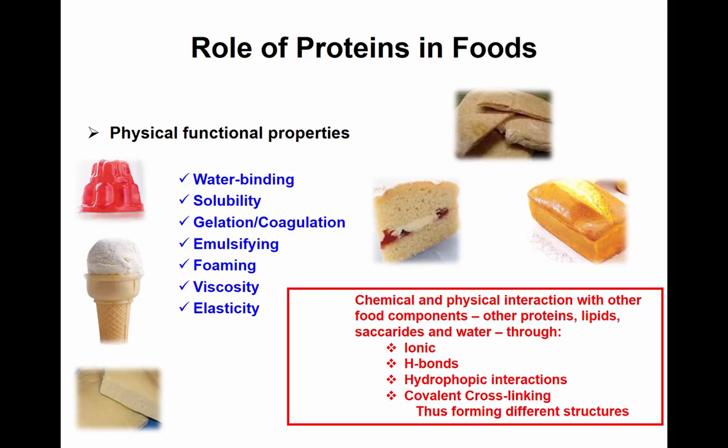What causes these different functionalities is basically chemical interactions — chemical and physical — with other food components. Proteins interact with other proteins, forming a gel, or forming a film around an air bubble, or forming a film around an oil droplet. Interaction with lipids, as in emulsification. Interaction with sugars, such as in the Maillard reaction. Interaction with water, obviously — through many different types of chemical bonding: ionic based on charge interaction, hydrogen bonding, hydrophobic, and covalent. We'll talk about all of these interactions in later lectures.